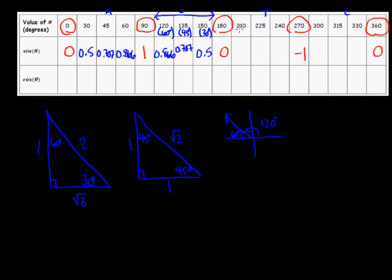In quadrant 3, we look for the related acute angle, but ratios will be negative because the sine ratio is negative in quadrant 3. So 210 degrees has a related acute of 30, giving negative 0.5; 225 has a related acute of 45, giving negative 0.707; and 240 has a related acute of 60, giving negative 0.866. Similarly, in quadrant 4, we get ratios of negative 0.866, negative 0.707, and negative 0.5.